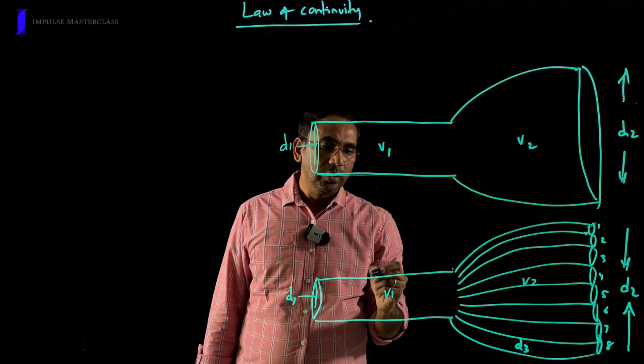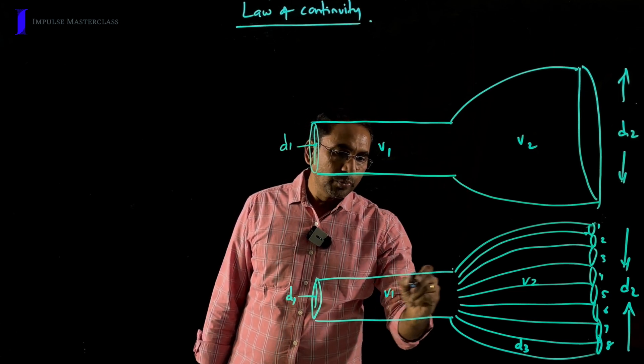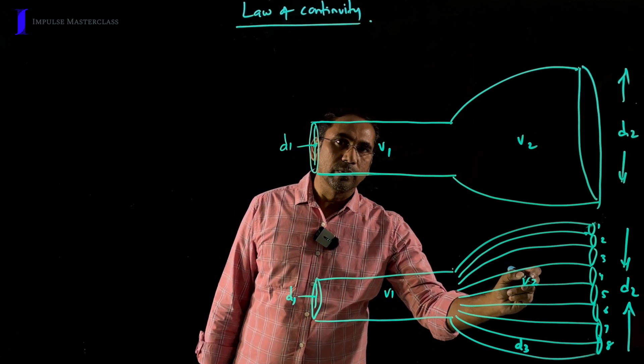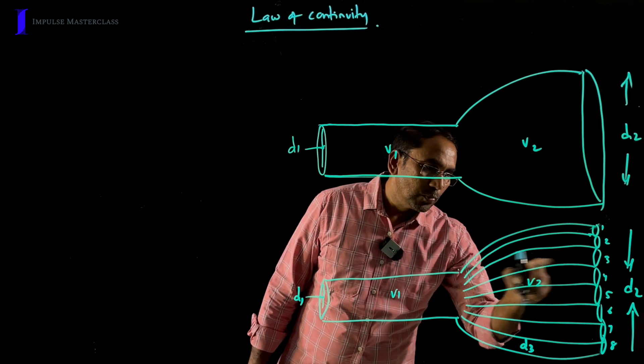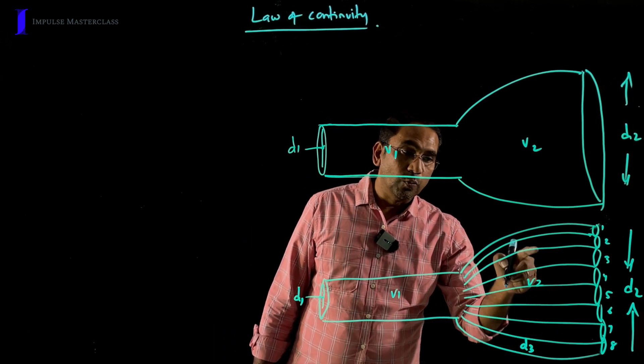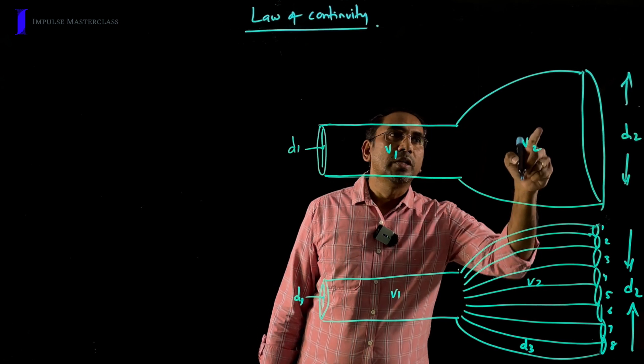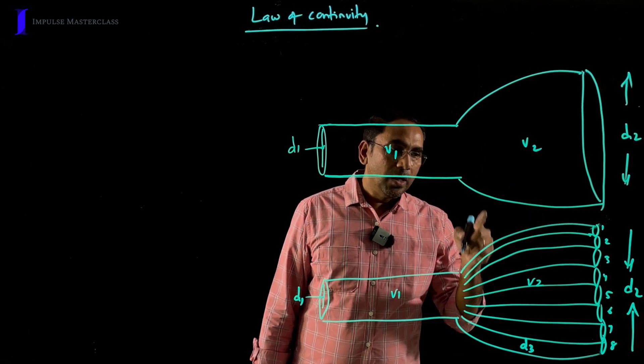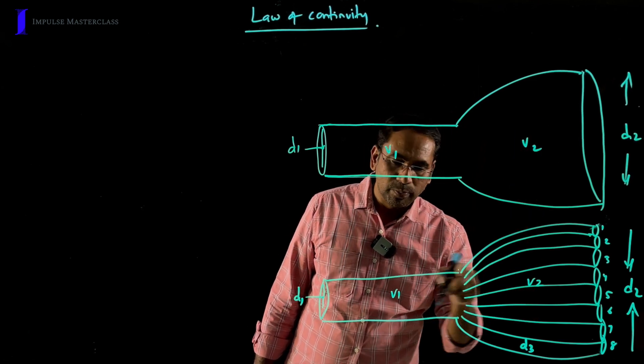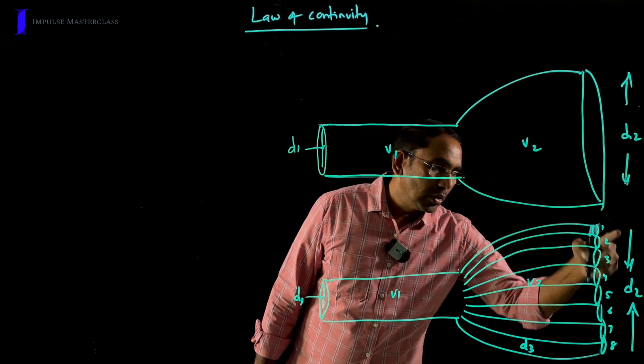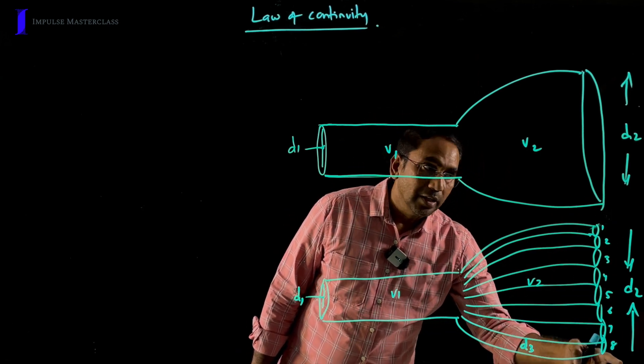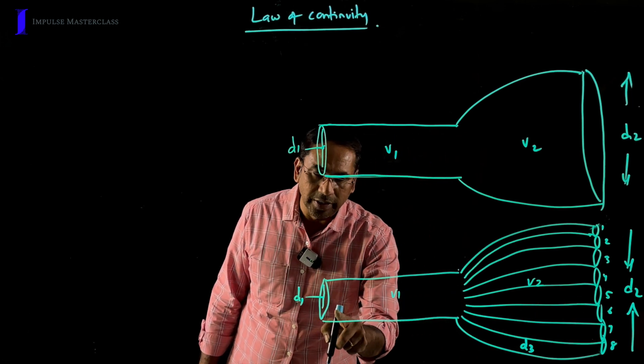Similarly, in pipe 2, V1 is greater than V2. In pipe 2, irrespective of the small number of tubules, the velocity at V1 is greater than V2.